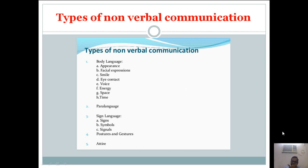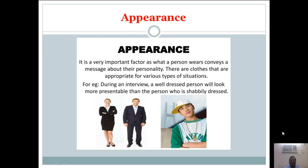The types of nonverbal communication shown in the body language component include: appearance, facial expressions, smile, eye contact, voice, energy, space, time, paralanguage, and sign language. You can show through signs, through symbols, through signals, through posture and gestures. You can convey your message through your attire. A particular dress you wear easily sends a message to the next person — for example, a police attire identifies the person as a police officer.